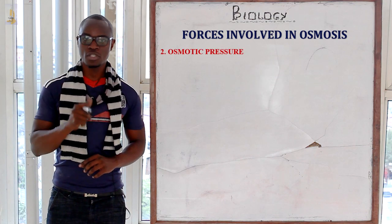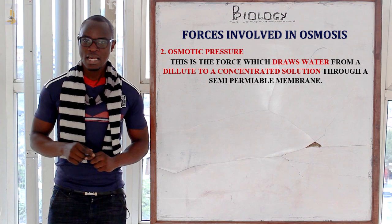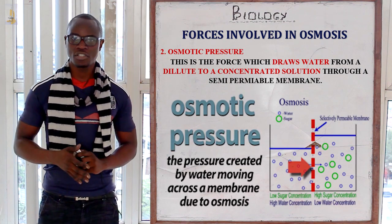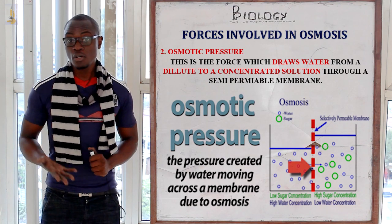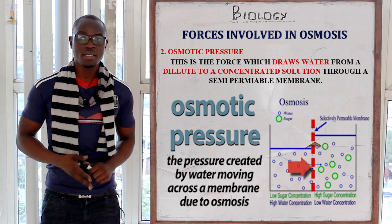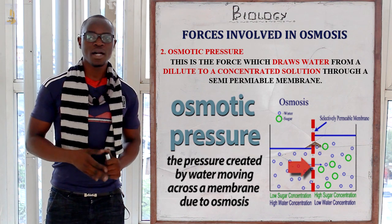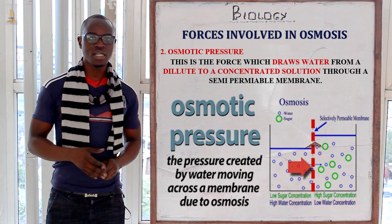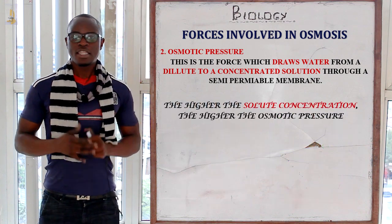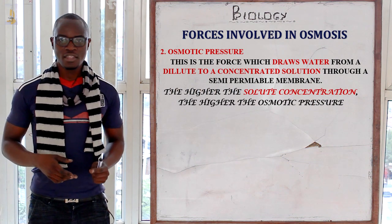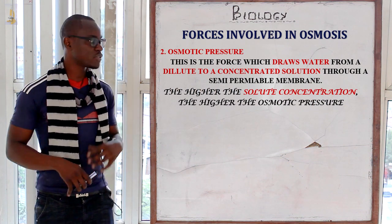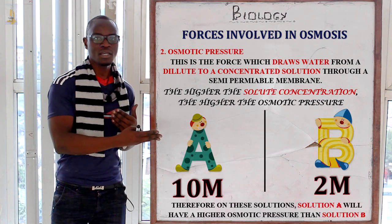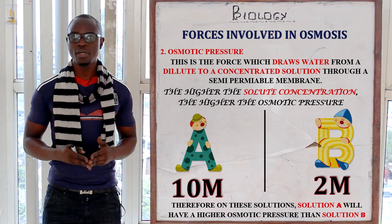Let's define osmotic pressure. Osmotic pressure is the pressure by which water is drawn from a low to a high concentration. You might also say it is the pressure applied to stop water from going back to the dilute solution. The higher the solute concentration, the higher the osmotic pressure. So if the solute concentration of A is more than that of B, the osmotic pressure will be high.